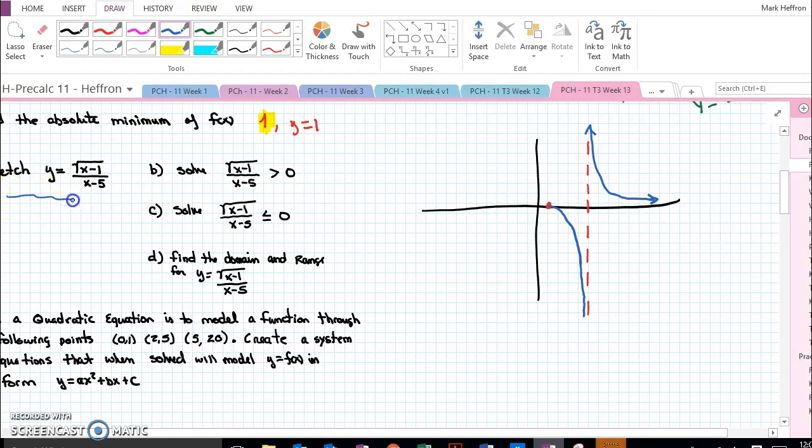The first thing you're asked to do is to sketch y equals radical x minus 1 over x minus 5. And this would be calculator OK. If you're not told to sketch it and you're asked things about it, sketch it anyway. It's the best way to really understand what's happening.